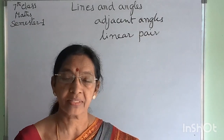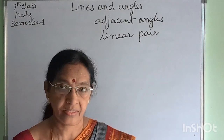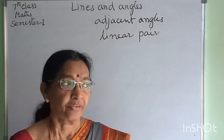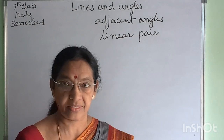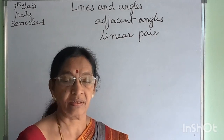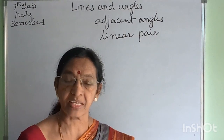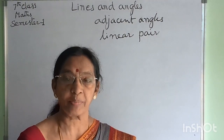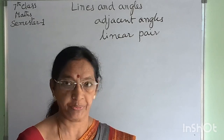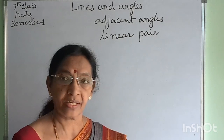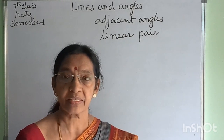Seventh class math, Lines and Angles. When two lines intersect each other, or when two rays or line segments meet at a point, an angle is formed. There are different types of angles.